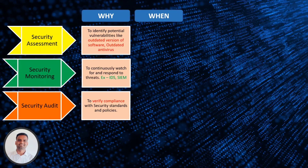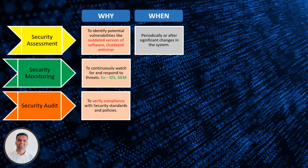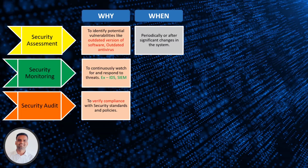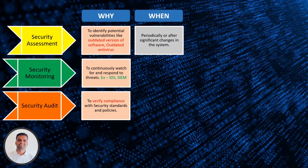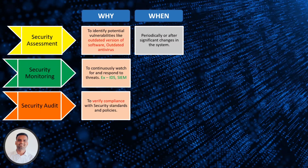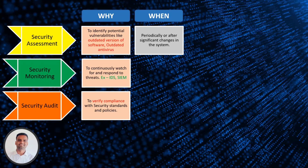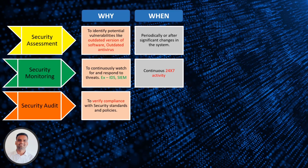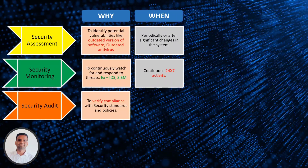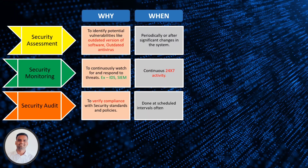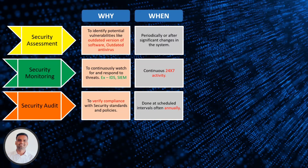Security assessment is done periodically or after significant changes in the system — for example, if your company has recently updated software to a newer version, or following a system breach, or when introducing new hardware or software. Security monitoring, on the other hand, is a continuous 24/7 activity. Security audit is done at scheduled intervals, often once a year, and the schedule is fixed. It can be done internally or externally.